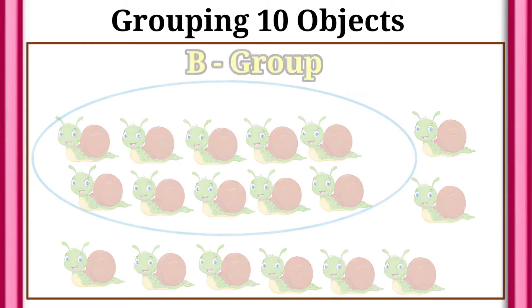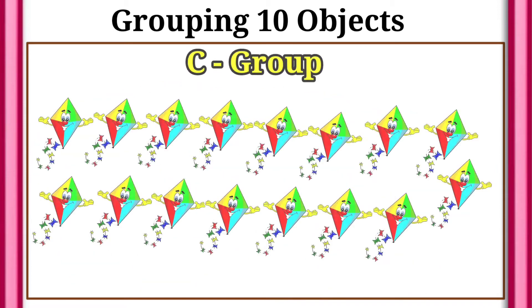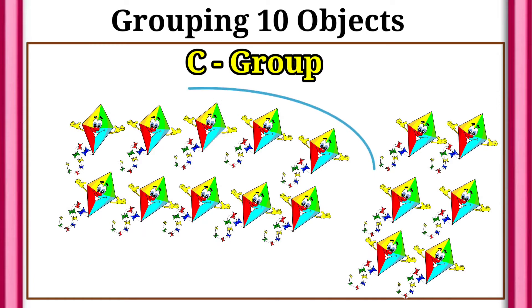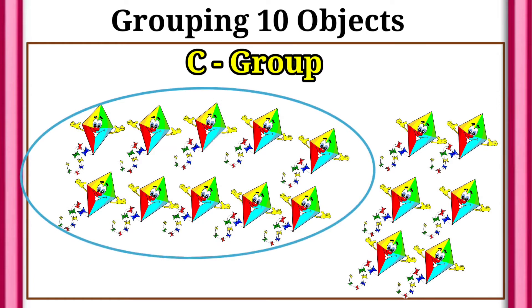Then we can see C group of objects. How many objects here? 16. Very good. Let's circle 10 objects only.